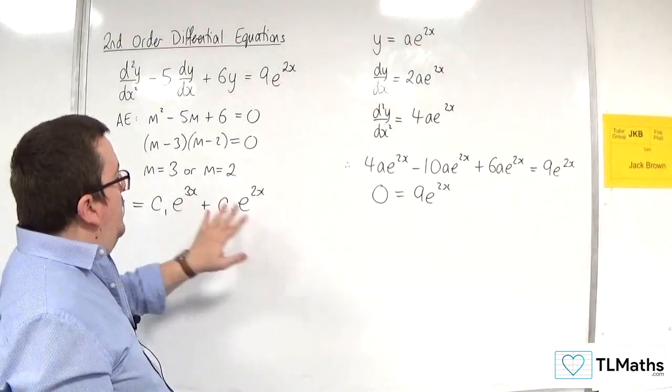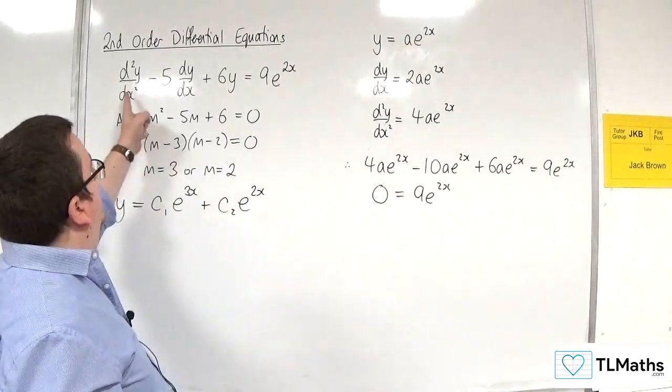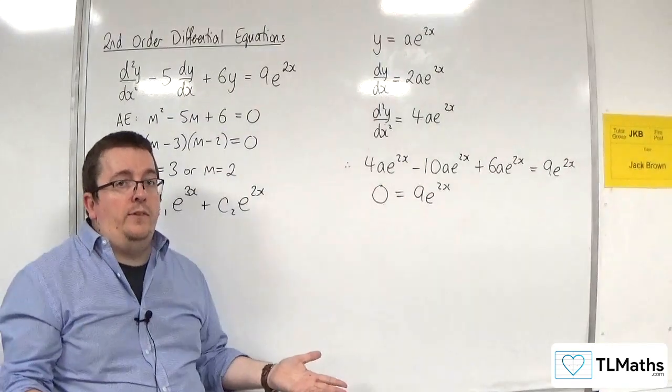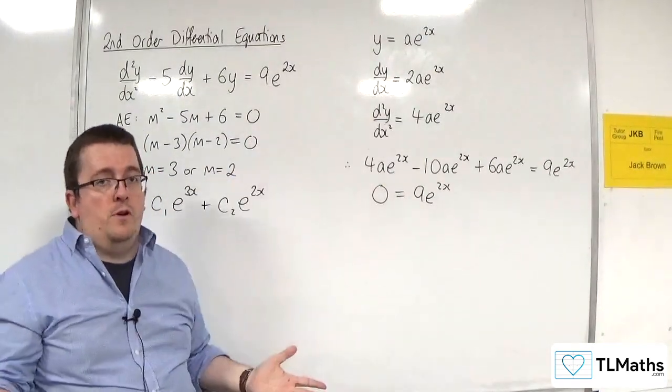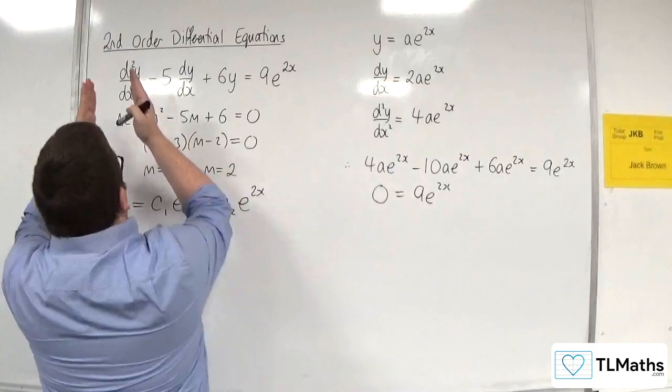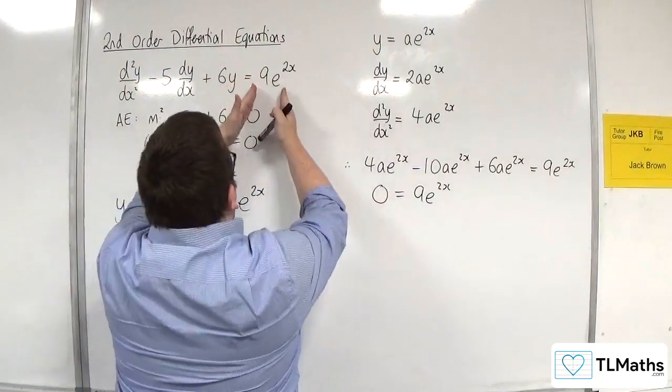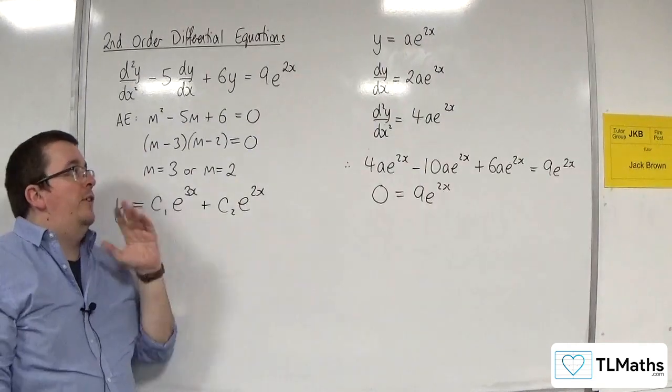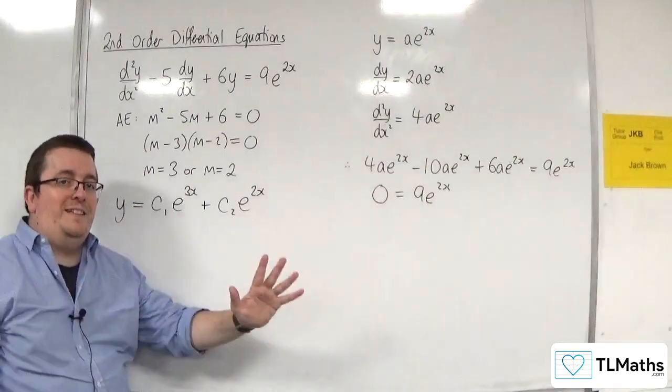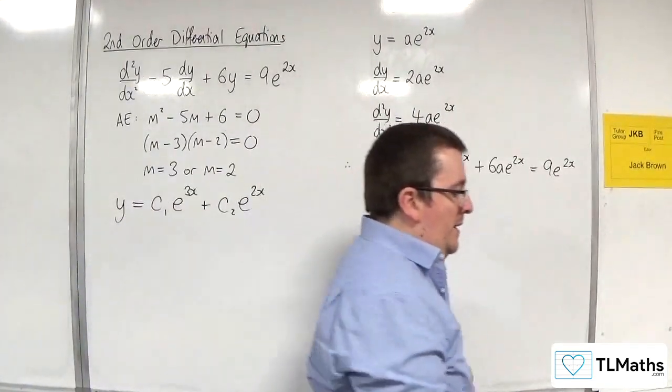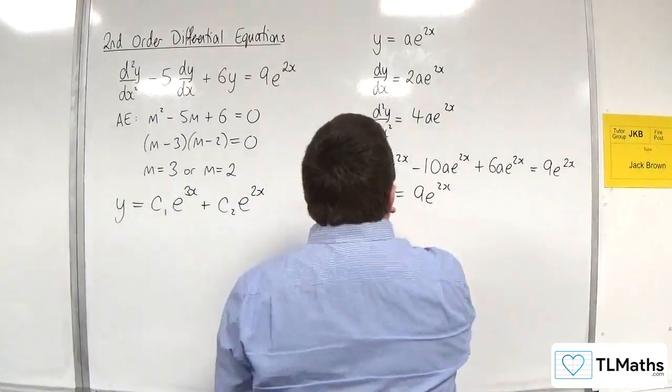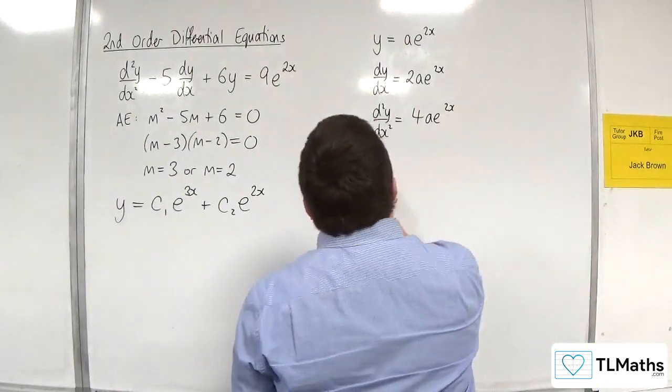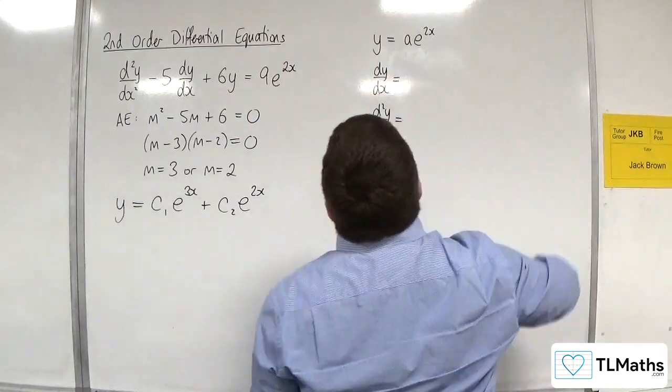And I know that if I substitute that in, it solves the homogeneous case where I've got it equal to 0. So when I substitute it in here, I should get 0 by the definition of how we got there. Right, so that means it doesn't work. Can't do it that way. So how do we change it? How can we modify it so that it does work?